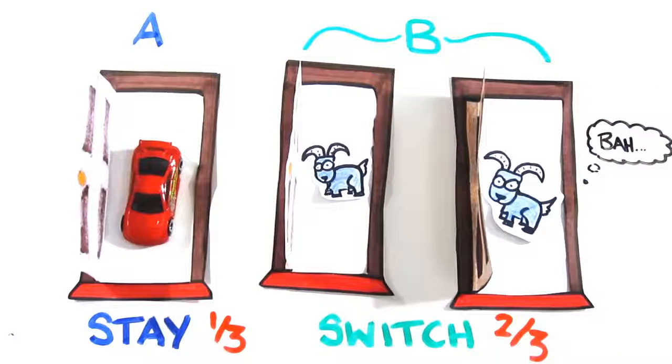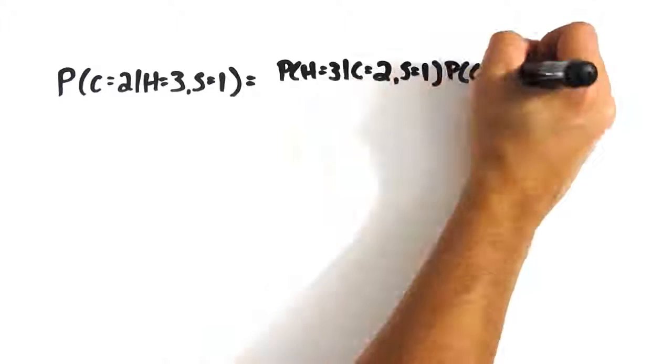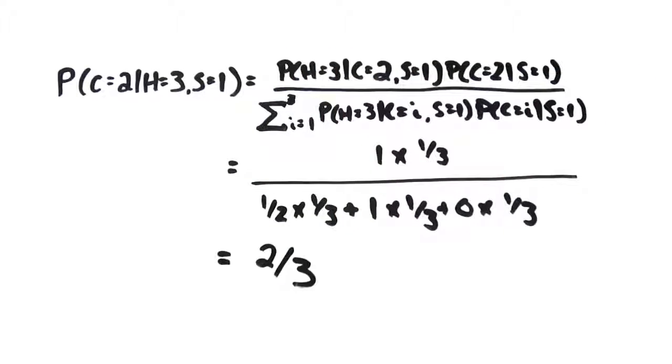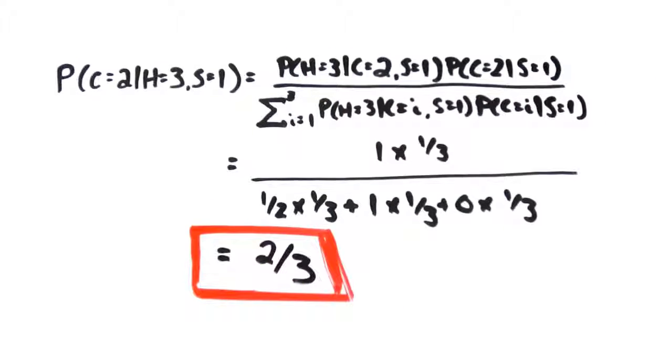This paradox has perplexed many people, including scientists and mathematicians to this day, because our gut tells us that switching will have no consequence. But when using formal calculations or computer simulators, the results don't lie. Switching your door increases the probability of winning.